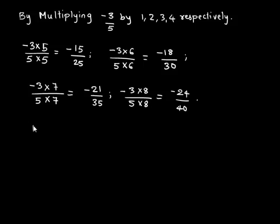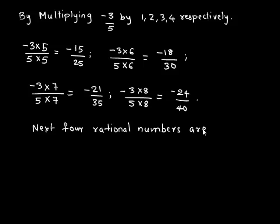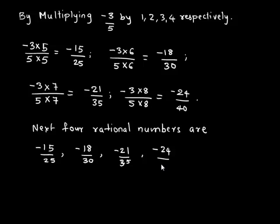Therefore, the next 4 rational numbers in the pattern are negative 15 upon 25, negative 18 upon 30, negative 21 upon 35, and negative 24 upon 40.